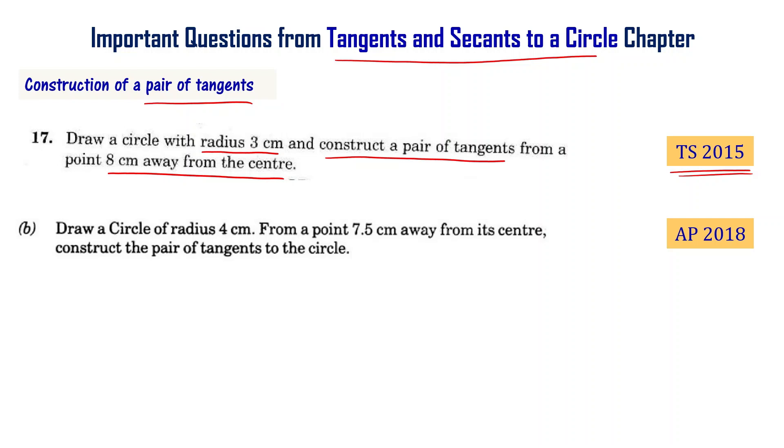Draw a circle of radius 4 cm from a point 7.5 cm away from its center. Construct the pair of tangents to the circle. This is the AP public exam 2018 question.